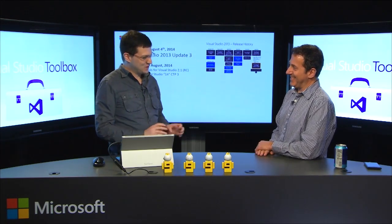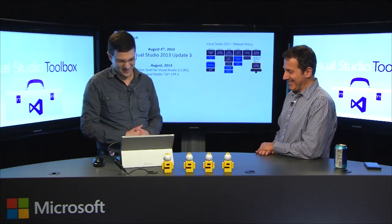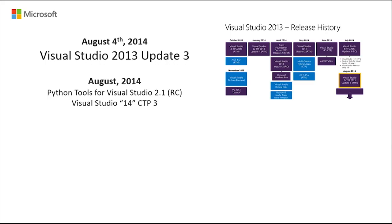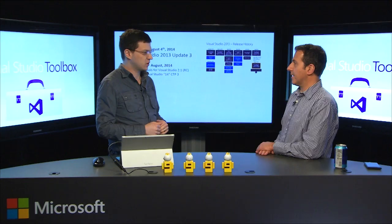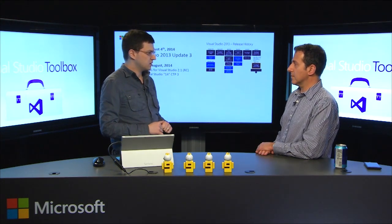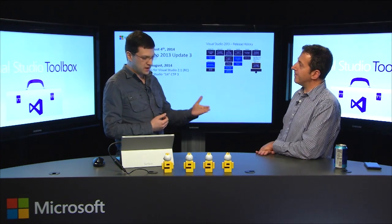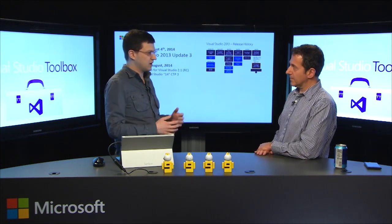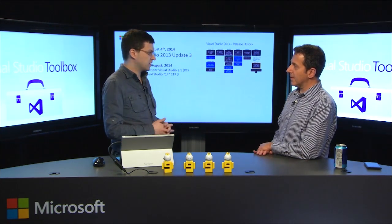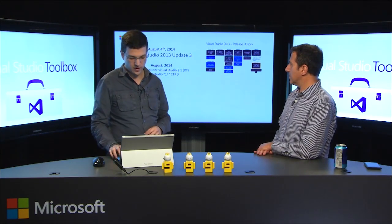After releasing Update 3, in August that same month we had two more releases. We started to ship an update to Visual Studio 14 - that was CTP3. We also shipped the Python tools update. Don't forget that we build high-quality tools for working on Python in Visual Studio - scientific, websites, Azure integration. Python Tools 2.1 RC landed right there in August.